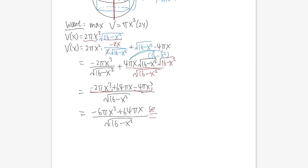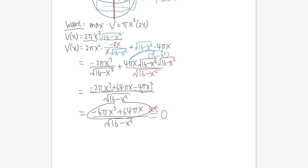Set V' = 0. We don't need to worry about where the derivative is undefined (x = 4), because plugging x = 4 into the volume equation gives zero anyway. So we just set the numerator equal to zero: −6πx³ + 64πx = 0.